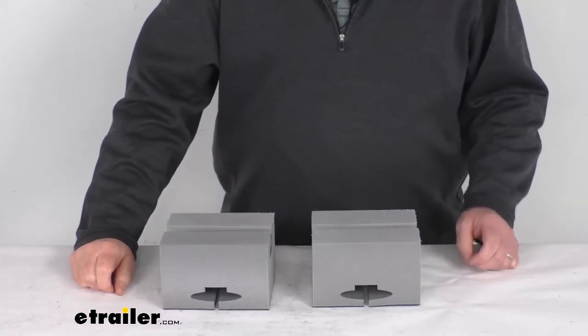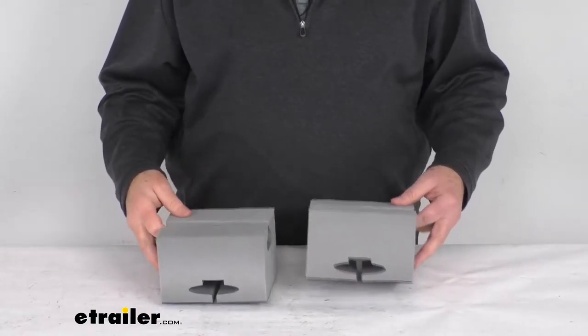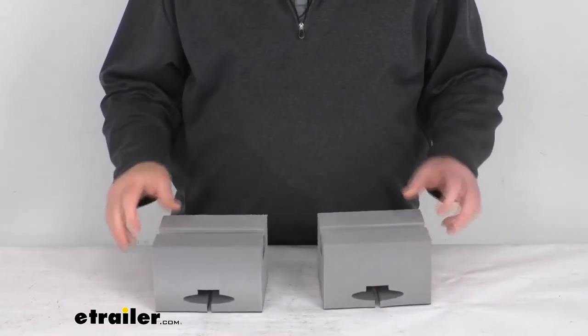Hello everybody, this is Jeff at eTrailer.com. Today we're going to take a look at the Malone six inch long foam blocks for canoes. It's for a quantity of two blocks.